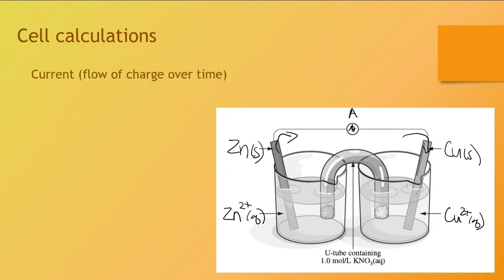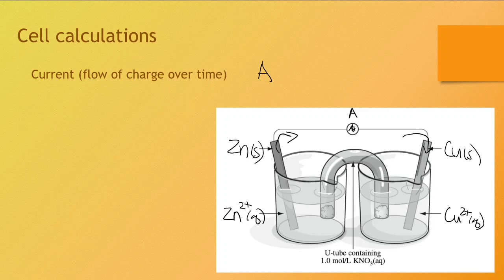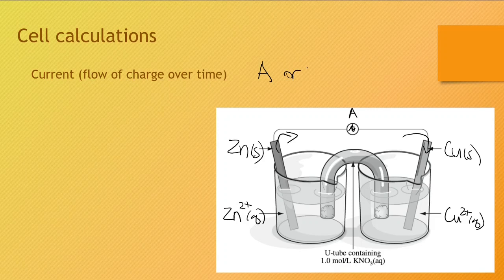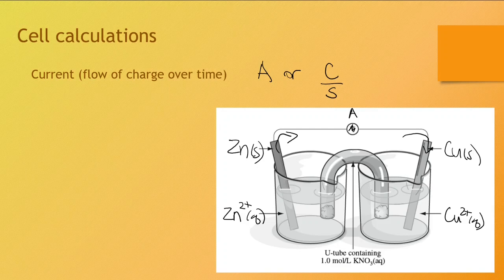So current often will be represented in the units of amperes. However, because of our focus on cancelling units when we do a calculation, it is good to know that this information, ampere, can also be represented as coulombs per second. In other words, how much charge is flowing through there for every second that the cell operates. So using those two units interchangeably is very important.